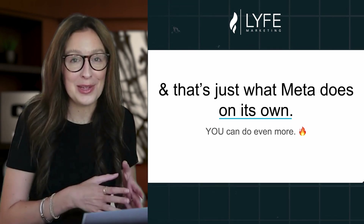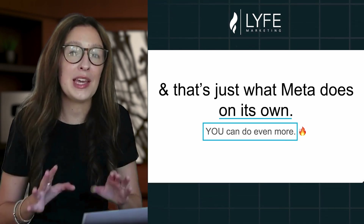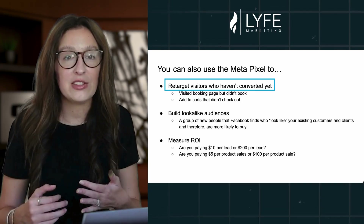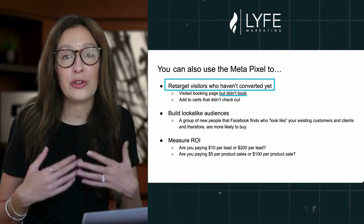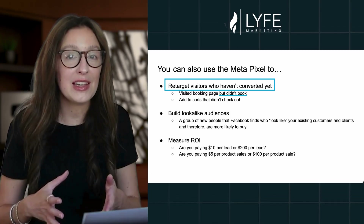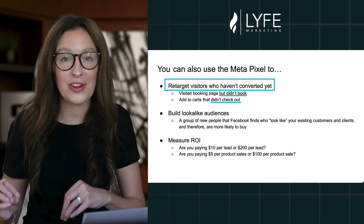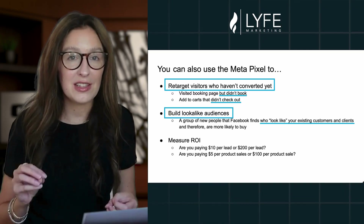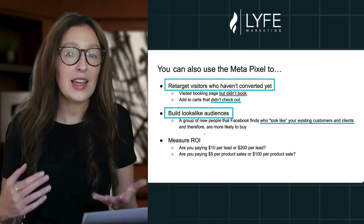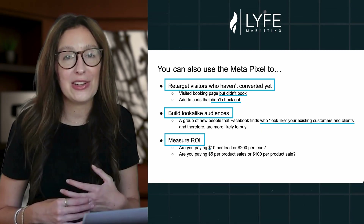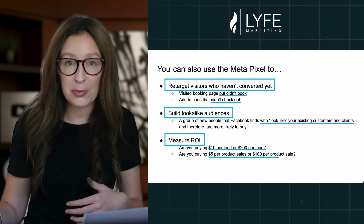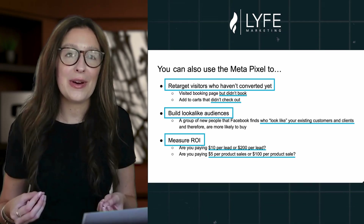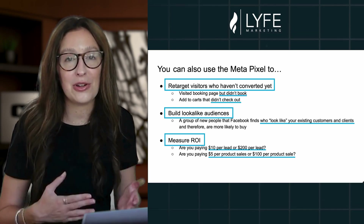And that's just what Meta does on its own. But there are a few steps further that you can take to really amp up the amount of sales and lead form completions that you're getting. You can retarget visitors who haven't converted yet — like showing ads to someone who visited your booking page but didn't book, or showing ads of the exact product someone was looking at but didn't buy, sending them back to finish checkout. You can build lookalike audiences, which is a group of new people that Facebook finds who look just like your existing customers and are therefore more likely to buy with you. And you can measure ROI — so you know if you're paying $10 per lead or $200 per lead, $5 per product sale or $100 per product sale. I'm going to show you how to set up all of these things in later videos, but I just wanted you to start grasping the power of what the Meta Pixel installed can do for your business.